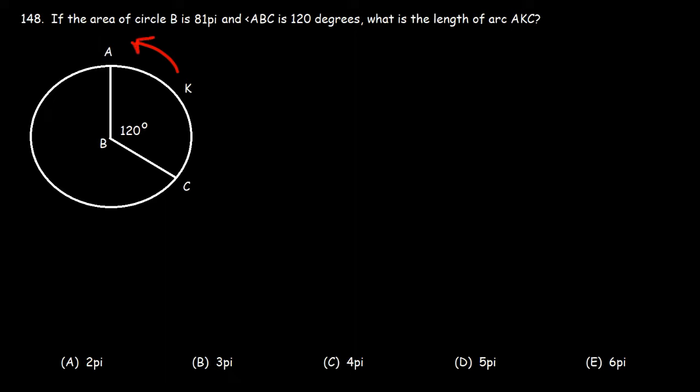So here's arc AKC. How can we determine the length of it? What formula do we need? Perhaps you've seen this equation. S, the arc length, is equal to the angle theta times R, where R is the radius of the circle.